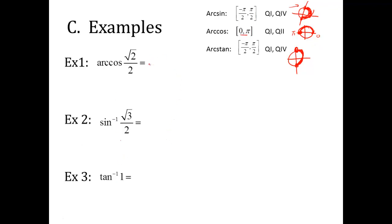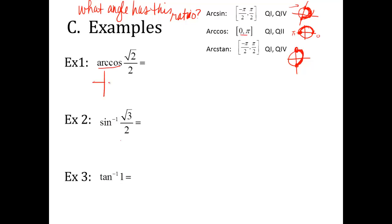Let's solve: arc cosine of square root of 2 over 2. This asks what angle has a cosine of √2/2 within its limitations. Arc cosine is restricted to quadrants 1 and 2. Looking at the unit circle, at pi over 4 the cosine is √2/2. At 3pi over 4 it's negative √2/2. Since we need the positive value, the answer is pi over 4.